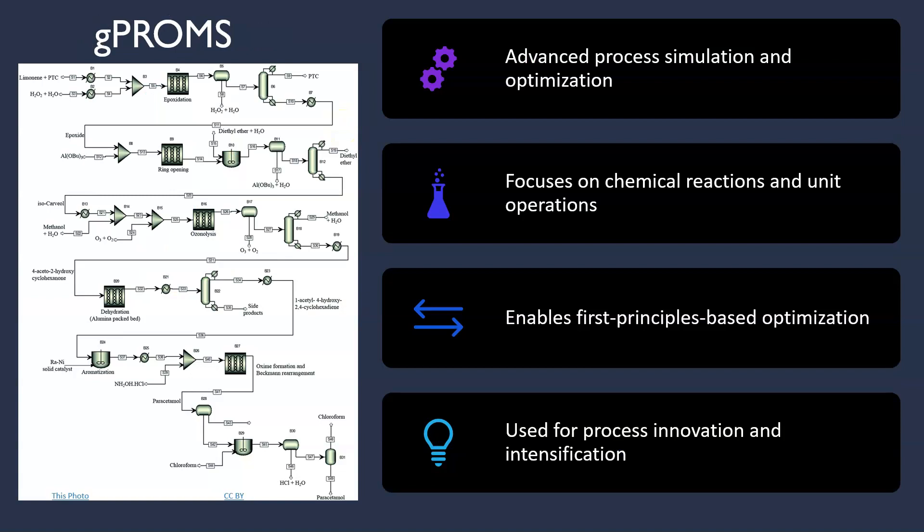Next is GPOMS. GPOMS is an advanced process simulation and optimization software with a primary focus on chemical reactions and various unit operations. With GPOMS, chemical engineers have powerful tools at their disposal to model and analyze complex processes, leading to improved efficiency and increased profitability.